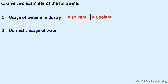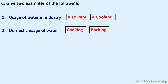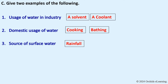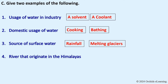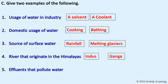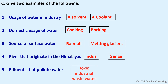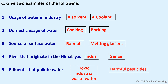Give two examples of the following: usage of water in industry — as a solvent and as a coolant. Domestic usage of water — cooking and bathing. Sources of surface water — rainfall, melting glaciers, and rivers that originate in the Himalayas such as the Ganga. Effluents that pollute water — toxic industrial waste and harmful pesticides.